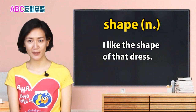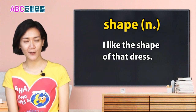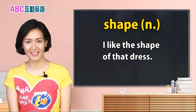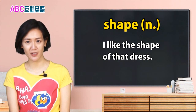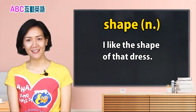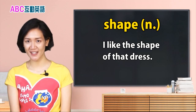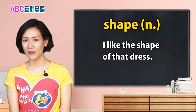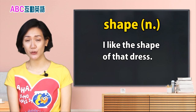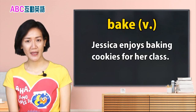今天的文章，我们来看每个国家有不同的面包，我们先来一起看几个单字。第一个：shape，shape，形状，是个名词。I like the shape of that dress. 我喜欢那件裙子的形状。